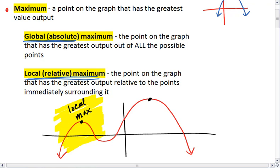Whereas the second maximum is a global max, and that's because it's the highest point, or it has the greatest output for every single possible value on this graph.